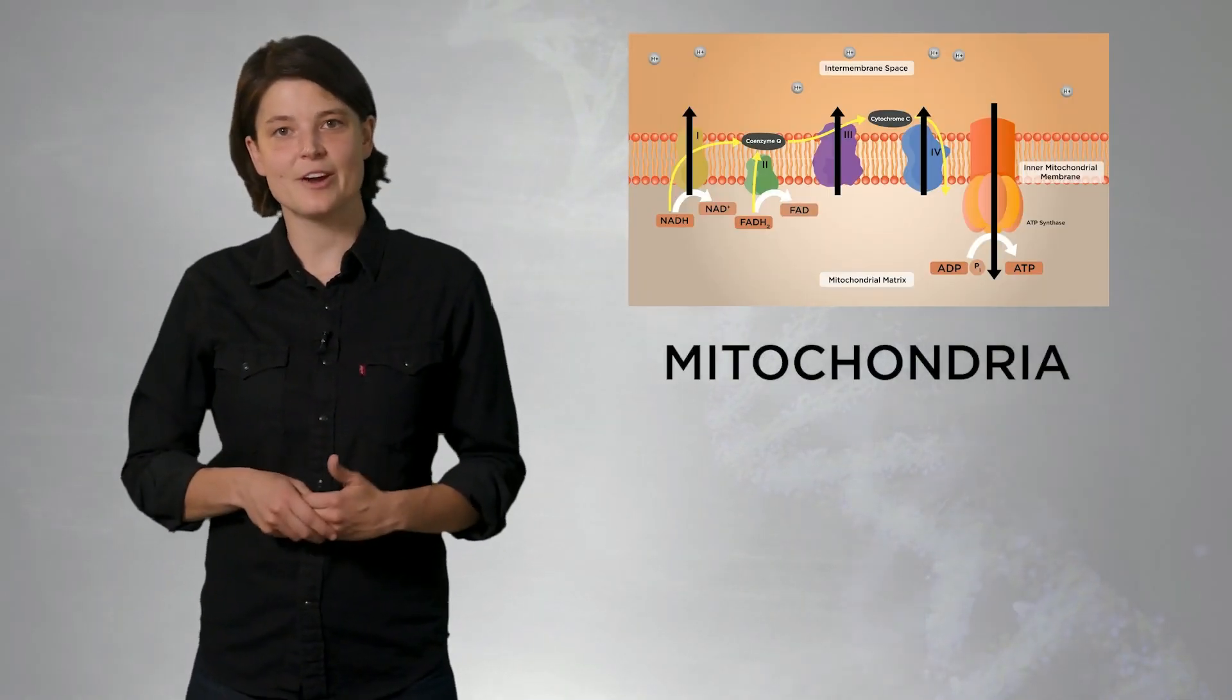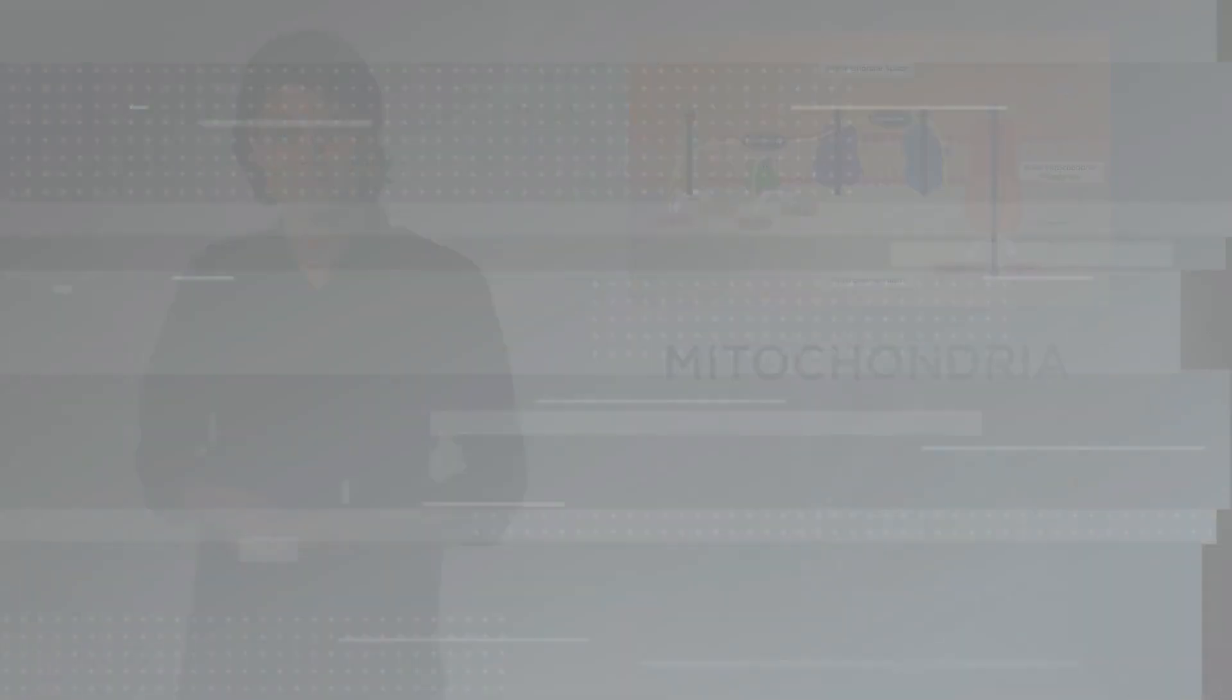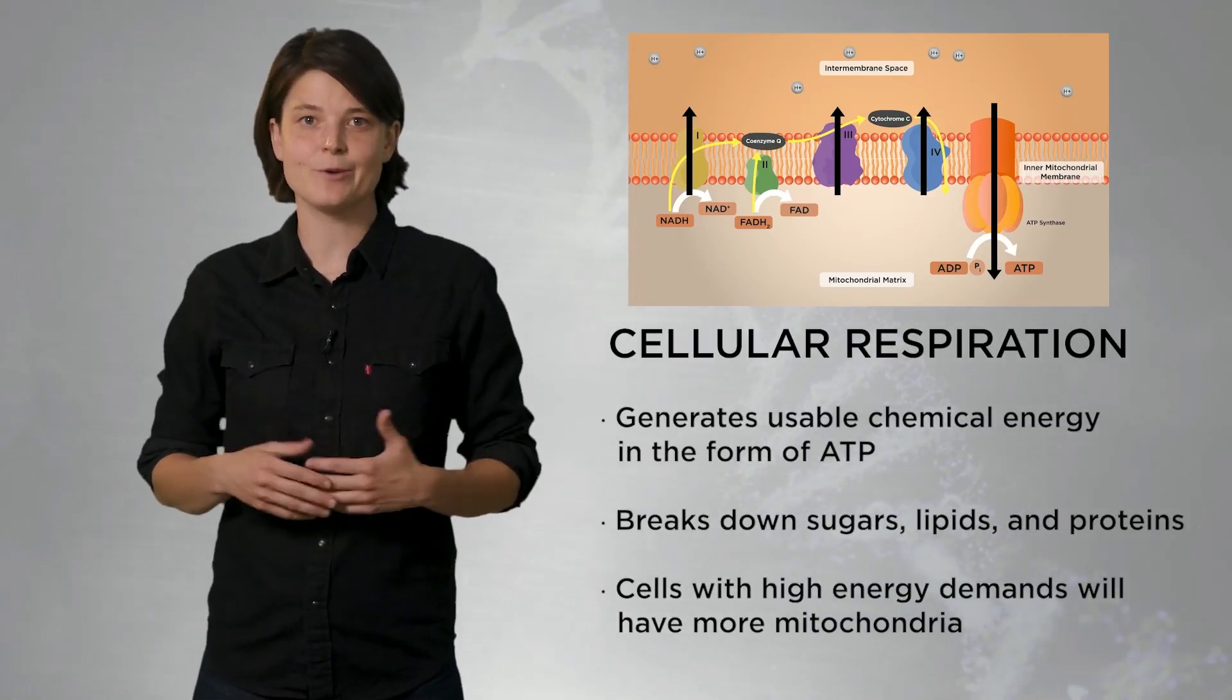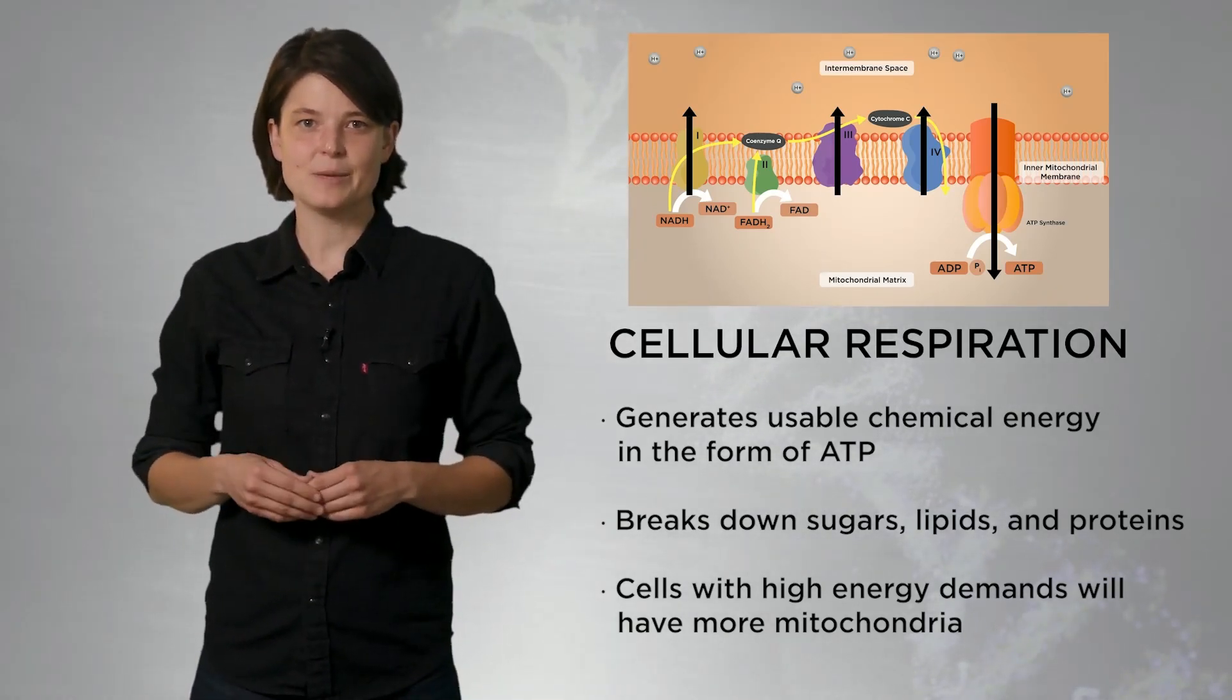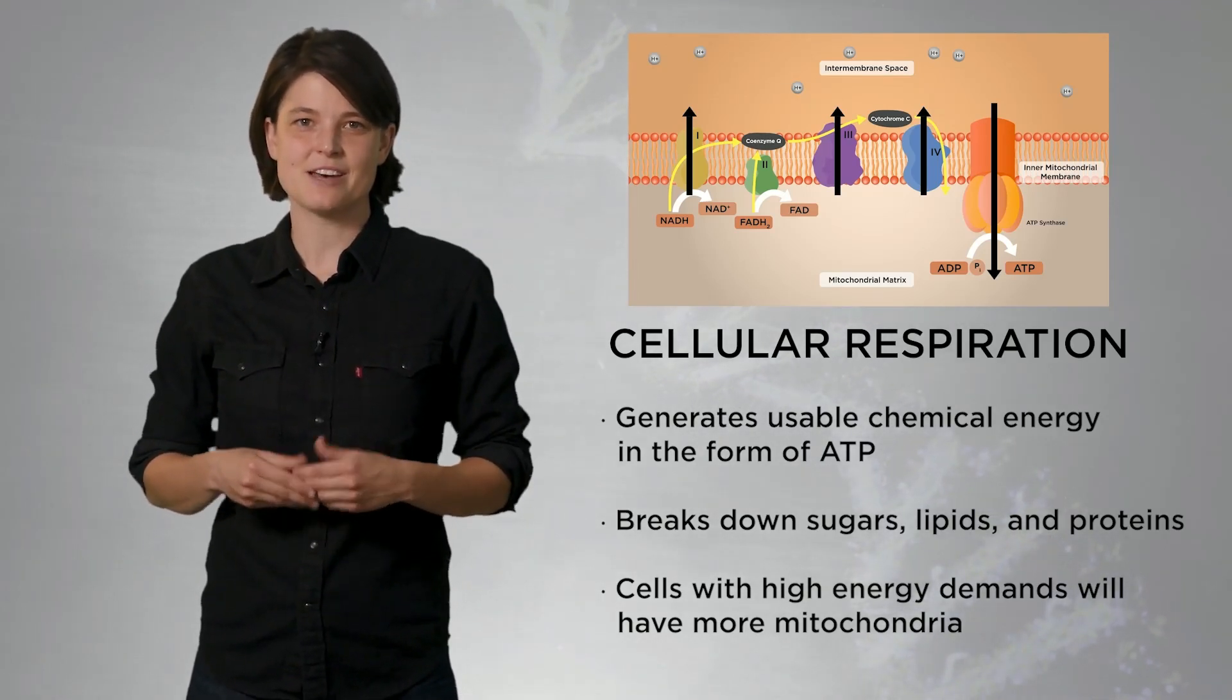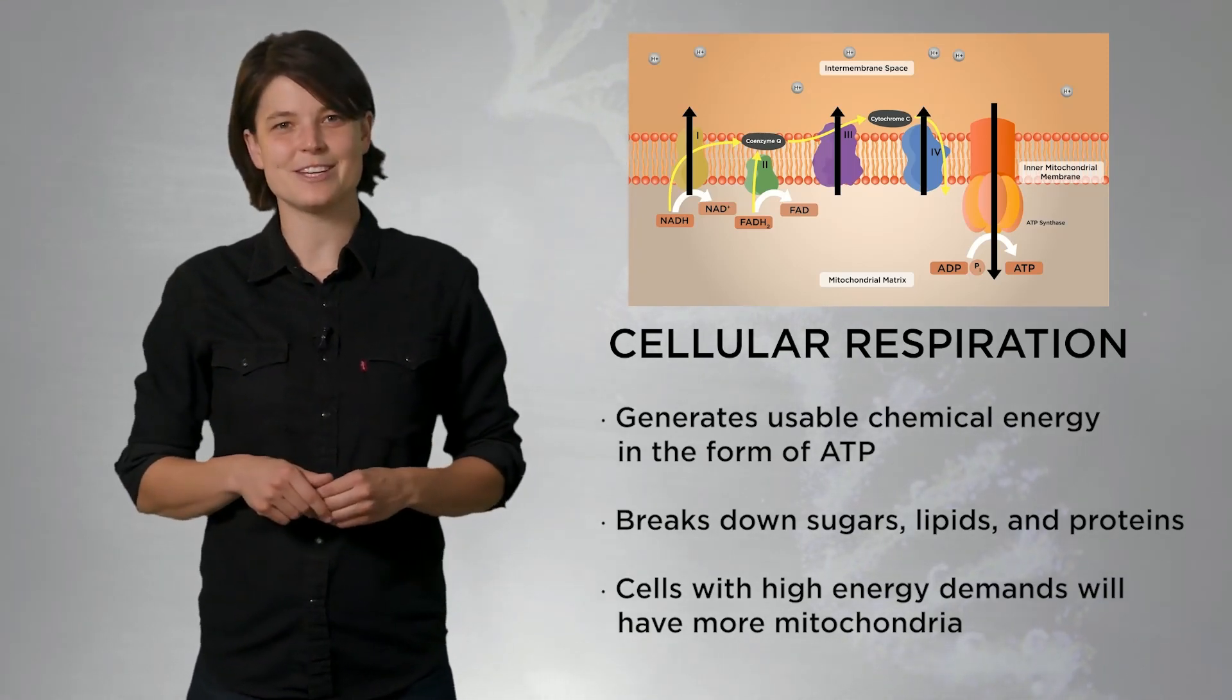Mitochondria are critical to eukaryotic cell function because they make energy for the cell through a process called cellular respiration. Cellular respiration is the process of generating usable chemical energy in the form of a molecule called ATP by breaking down fuels such as sugars, but also lipids and proteins. Almost all eukaryotic cells have mitochondria, but some cells have more than others. Muscle cells, for example, have very high energy needs and therefore have a greater density of mitochondria.